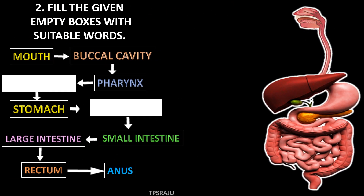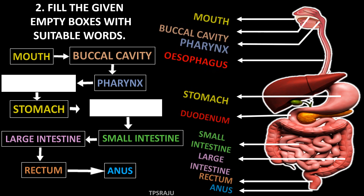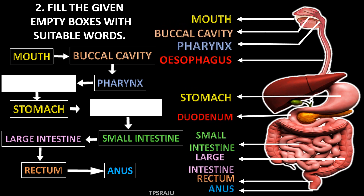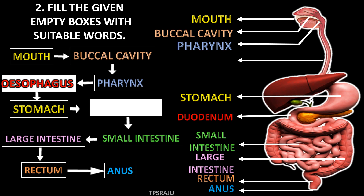Then, the second question. Observe here. There is a flowchart with 2 empty boxes. Which words are suitable for these empty boxes? The first one is Esophagus and the second one is Duodenum.